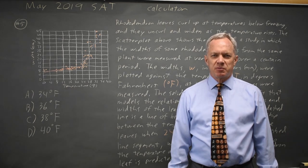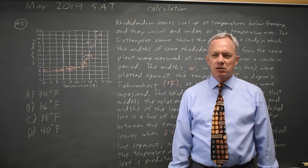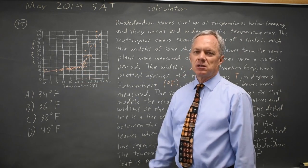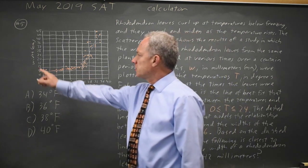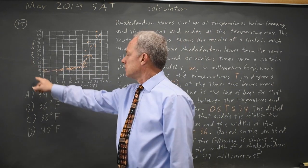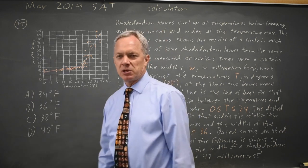This is calculator question number five from the May 2019 SAT. College Board gives us a scatter plot with the width of rhododendron leaves compared to the temperature at which that width was measured.